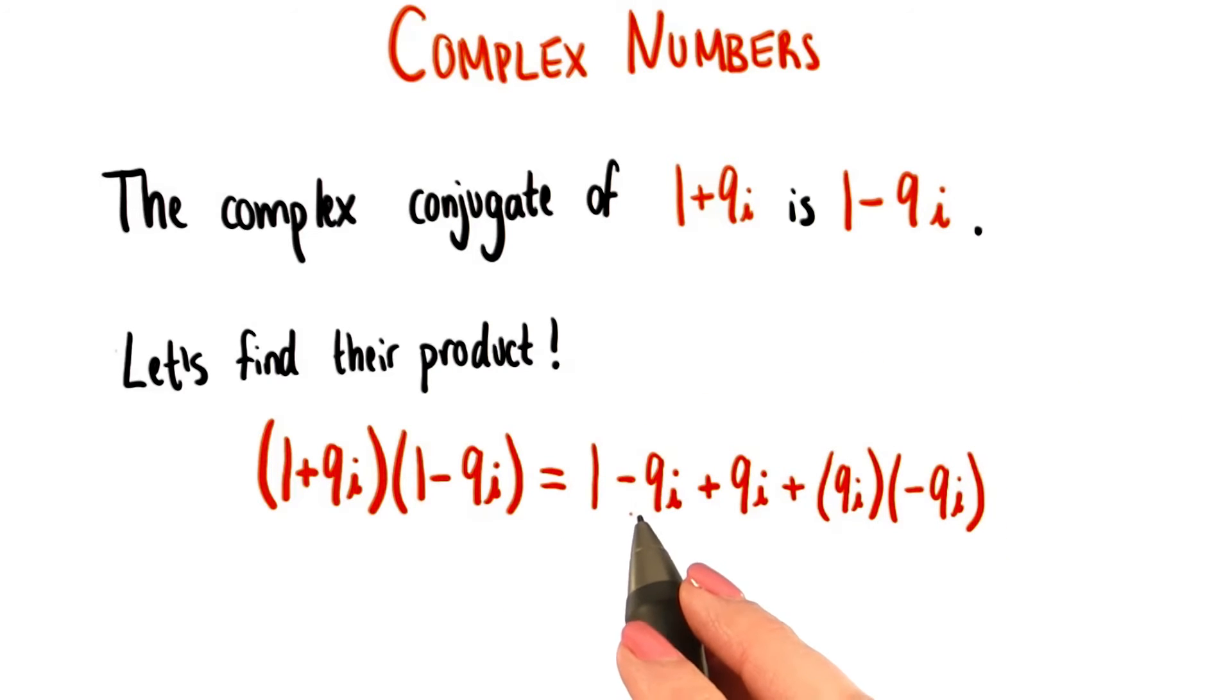Notice already we can see that these two terms, negative 9i and positive 9i, cancel one another out. Just like we had happen with our previous conjugate pair multiplied together.